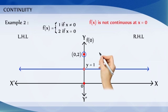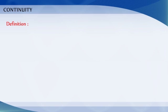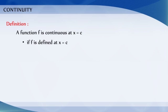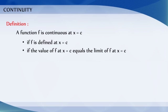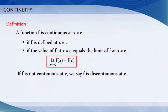Now let us give the definition for the continuous function. A function is continuous at x is equal to c if the function is defined at x is equal to c, and if the value of the function at x is equal to c equals the limit of the function at x is equal to c. If f is not continuous at c, we say f is discontinuous at c, and c is called a point of discontinuity of f.